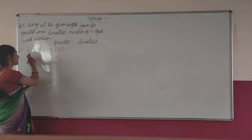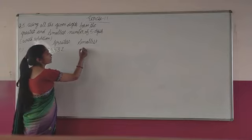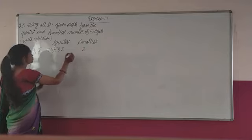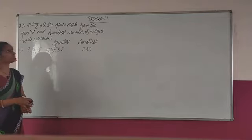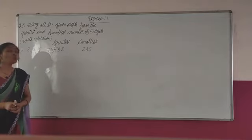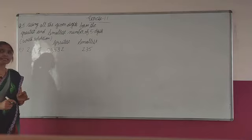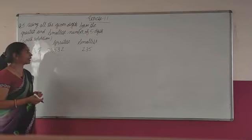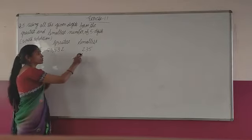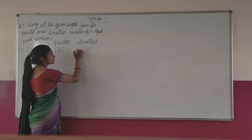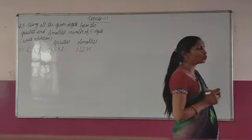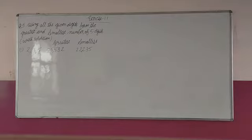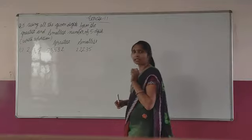Now we need the smallest number using the same digits 2, 3, 5. Without repetition it would be 235, but we need a 5-digit number. For the smallest number, we repeat the smallest digit — which is 2. So we repeat 2 twice, giving us 22,235.